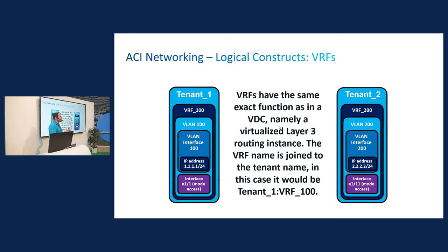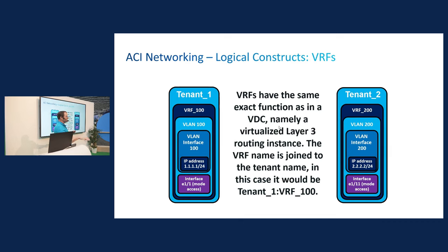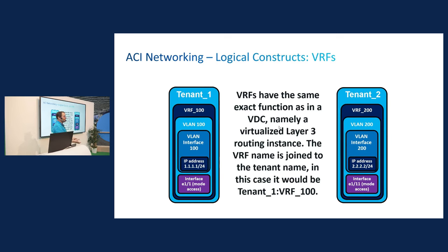VRFs — do you know the difference between a VRF in ACI and a VRF in NXOS? There's only one difference, because it does all the same things. It's a layer three routing instance. You can apply interfaces to that VRF and separate traffic. The only thing that's different is how it displays. When you create a VRF in a tenant and type 'show vrf all' at the CLI, this is how it's going to show up because the tenant and the VRF are inseparably tied. This got confusing in the beginning because it was called 'context' and 'private network,' but then they finally called it VRF and the light went on for me.